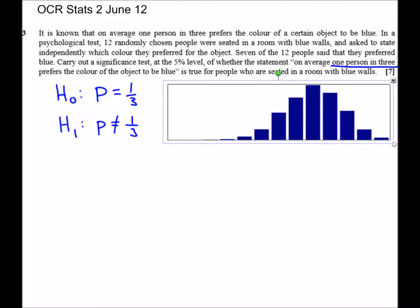You can see that our successes go zero successes, one, two, three, four, five, six, seven. So this is the one we're looking at specifically. And the question is, is this an unusual probability to get?